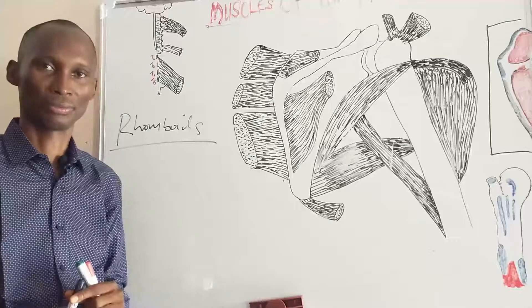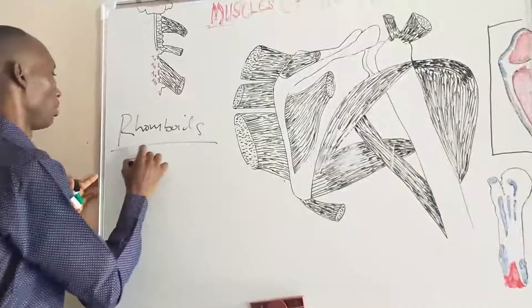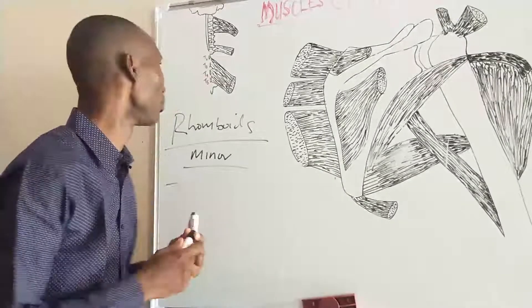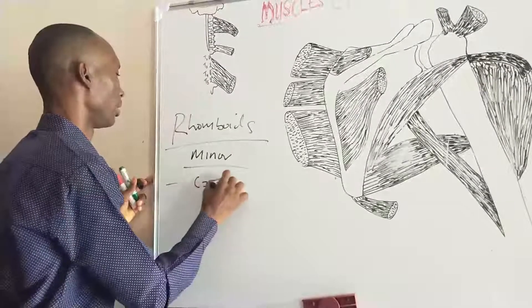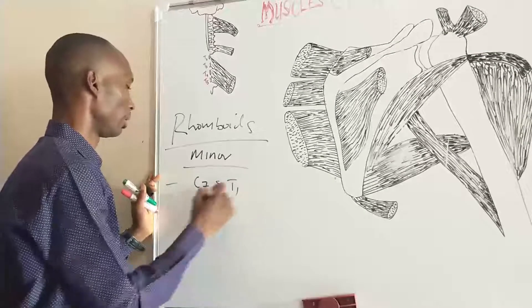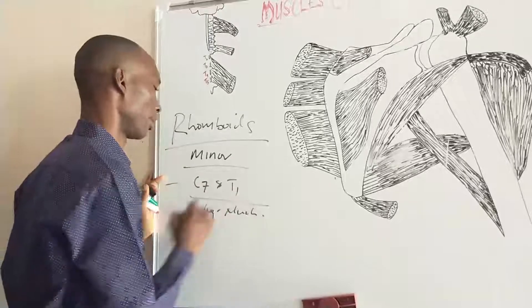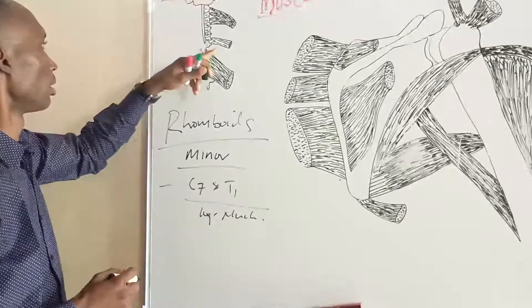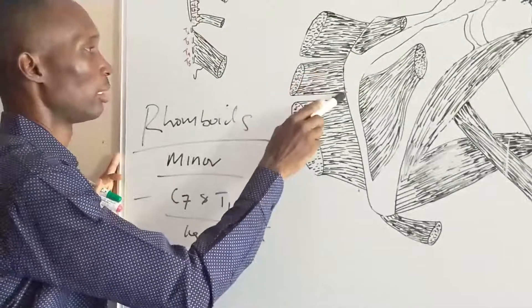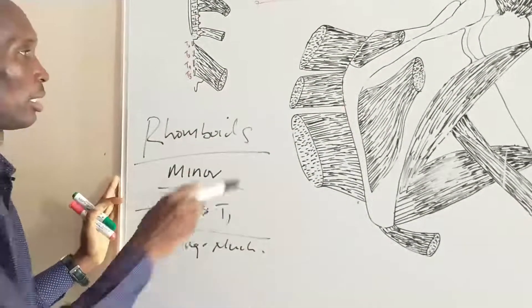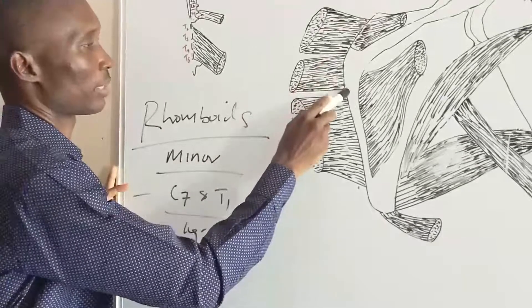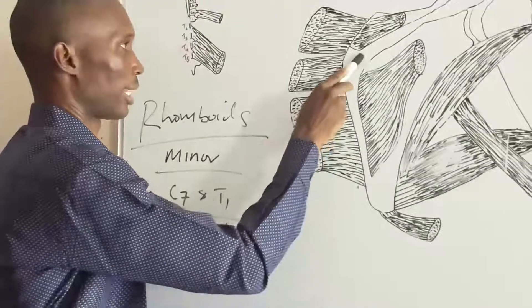The rhomboids minor takes origin from the spines of the C7 cervical vertebra and the T1 thoracic vertebra, and also from the terminal part of the ligamentum nuchae. It runs diagonally towards the posterior surface of the medial border of the scapula, inserting at the level of the root of the spine, below the insertion of levator scapula. The root of the spine is that part of the medial aspect of the scapula where the spine actually takes off from.